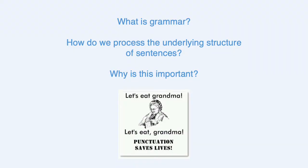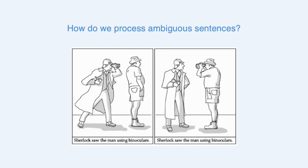We also do a deep dive into grammar — what is grammar and why is it important. We look at the underlying structure of sentences and how we process them. A good example is how we process ambiguous sentences. For example: 'Sherlock saw the man using binoculars.' How do we know who's holding the binoculars — is it Sherlock or the other man? And what clues do we use in processing this to figure it out?